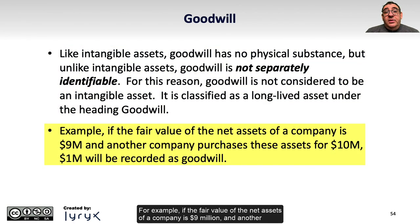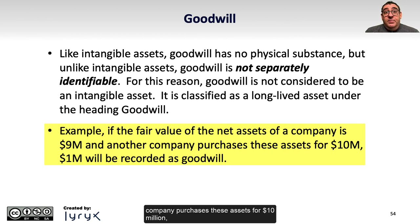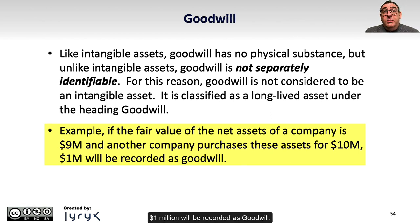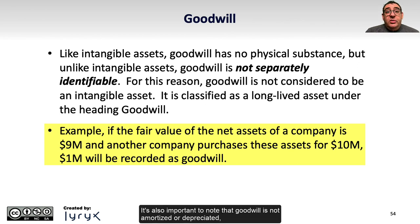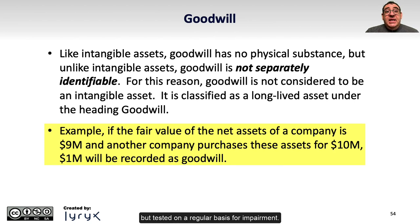For example, if the fair value of the net assets of a company is $9 million and another company purchases these assets for $10 million, $1 million will be recorded as goodwill. It's also important to note that goodwill is not amortized or depreciated, but tested on a regular basis for impairment.